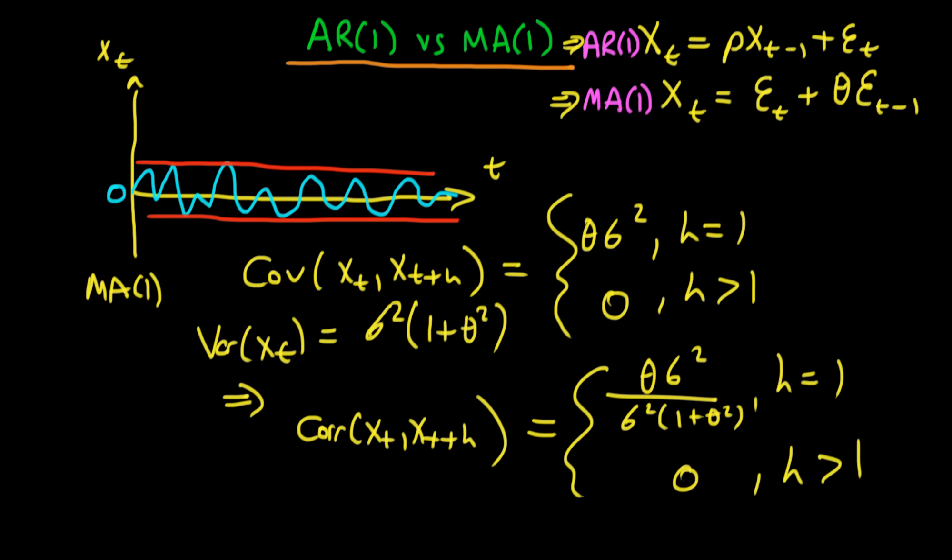We can simplify this correlation a little bit because we recognize that σ² is both on the top and the bottom. So the correlation is just θ/(1 + θ²). Just to remind ourselves, this is just for an MA(1) process.